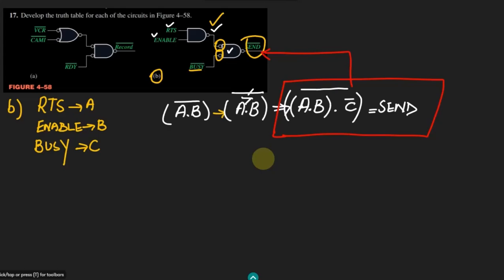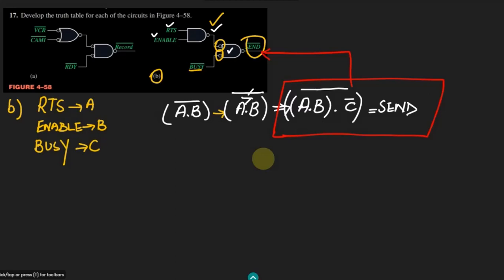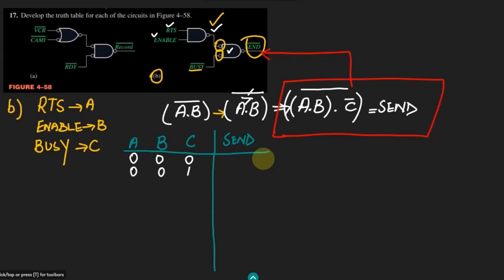The next step to find the output is to write all possible input combinations. Let me write columns for A, B, C and the output 'send.' Writing all possible combinations: 0 0 0, 0 0 1, 0 1 0, 0 1 1, 1 0 0, 1 0 1, 1 1 0, and 1 1 1.